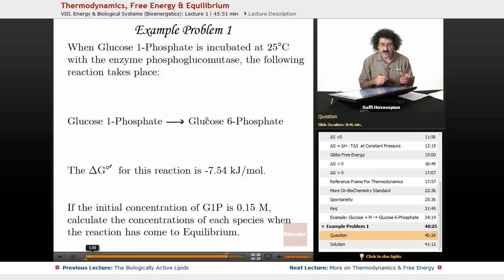When glucose 1-phosphate is incubated at 25 degrees Celsius with the enzyme phosphoglucomutase, the following reaction takes place: glucose 1-phosphate is converted to glucose 6-phosphate.